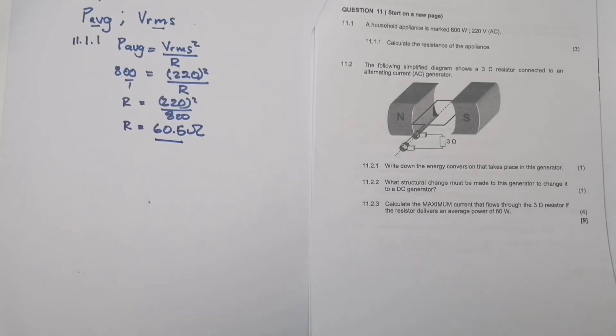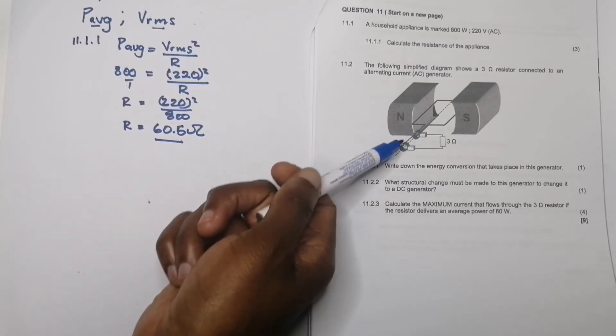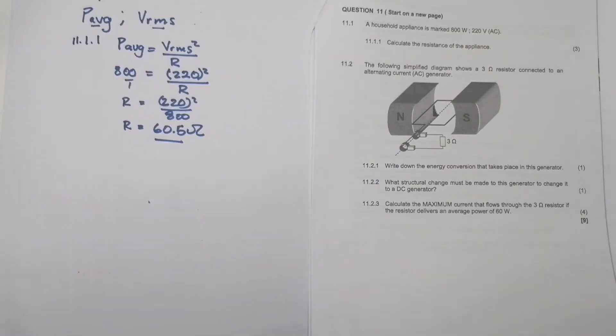Now they say the following simplified diagram shows a 3 ohm resistor connected to an alternating current generator. So they told us this is an AC generator, but another way we could have seen that is that we've got slip rings there. Remember, whenever you've got slip rings, then it tells us that that is an AC generator. They say to you, write down the energy conversion that takes place in this generator. Remember that a generator always converts mechanical energy into electrical energy. It's the other way with the motor - it converts electrical to mechanical - but here because we've got a generator, it's mechanical to electrical energy.